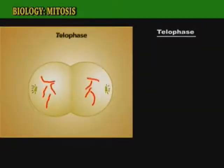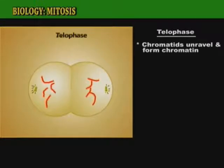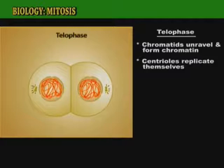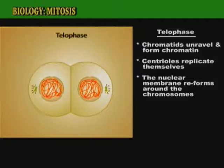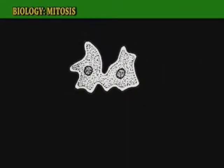The final phase of mitosis is called telophase. When the chromatids reach the opposite ends of the cell, they unravel to form chromatin again. The spindle fibers break down and the centrioles replicate themselves. The nuclear membrane reforms around the chromosomes at each end of the cell, leading to the formation of two nuclei. Telophase is usually followed by cytokinesis, which is the physical division of the cytoplasm into two daughter cells.